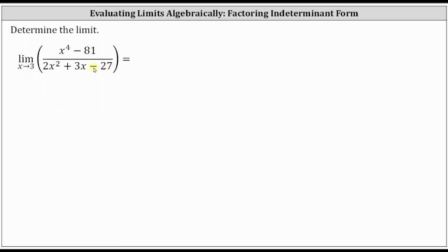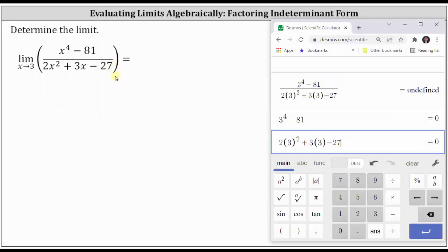Let's go ahead and check this first. Notice substituting three in for x, the calculator says undefined. That's because if we take a look at the numerator and denominator separately, we have the indeterminate form of zero divided by zero. This does not mean the limit does not exist — it just means we can't find the limit by performing direct substitution with the function in this form.